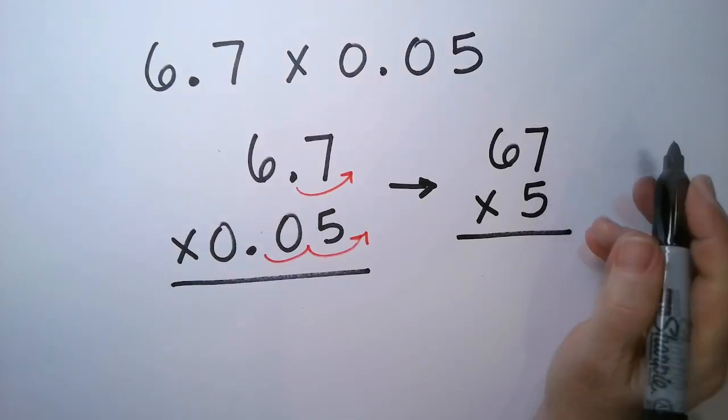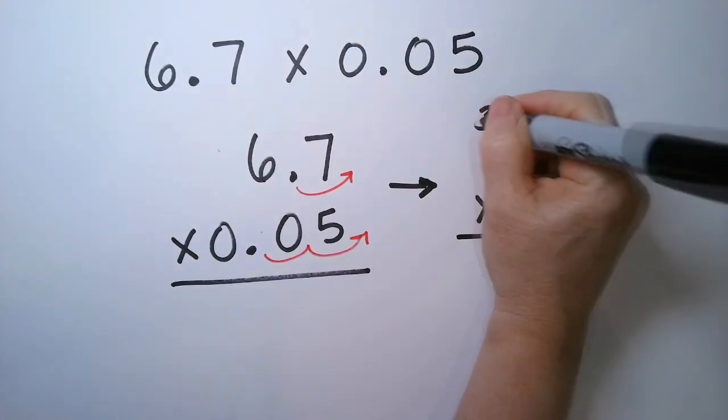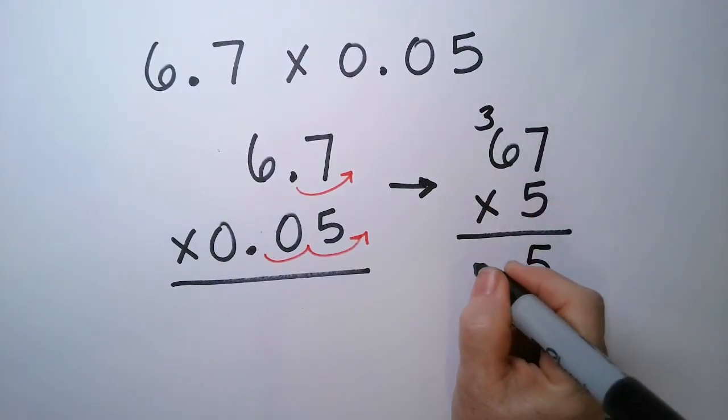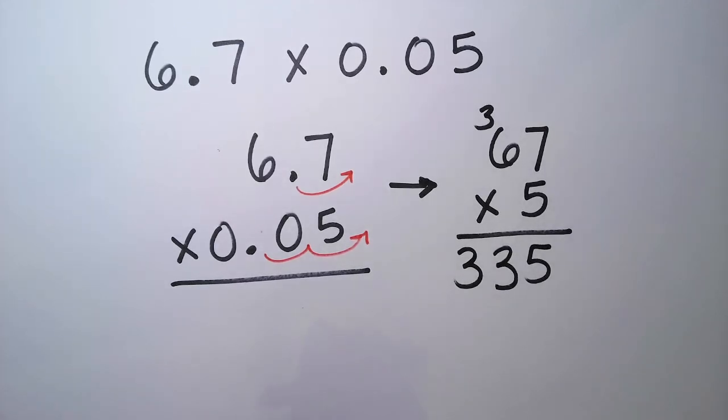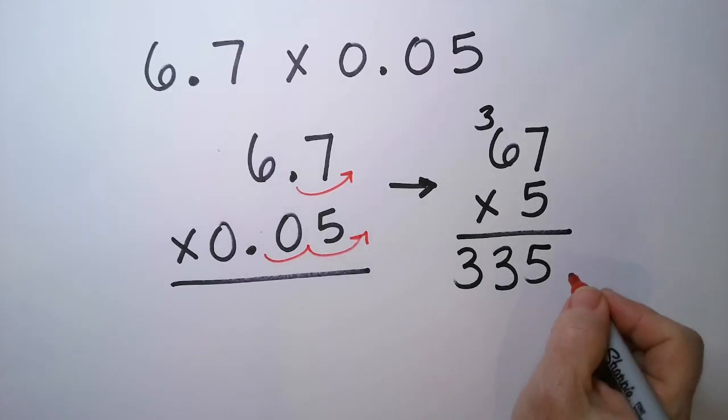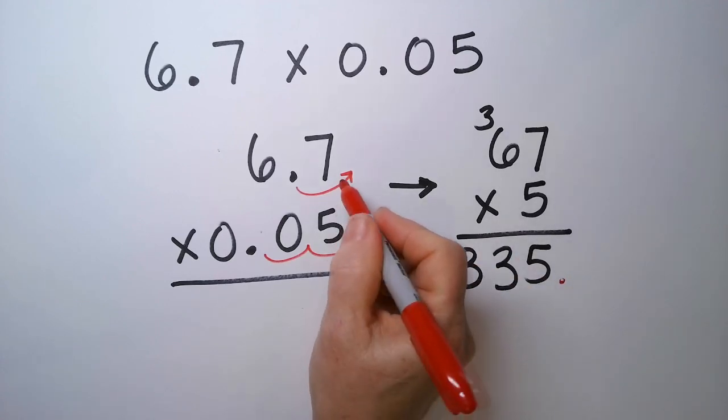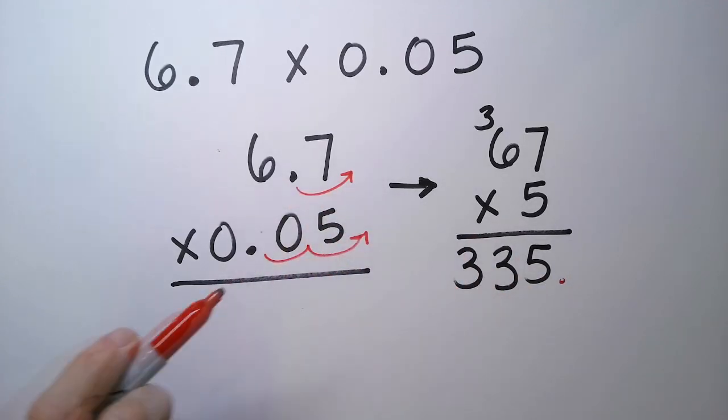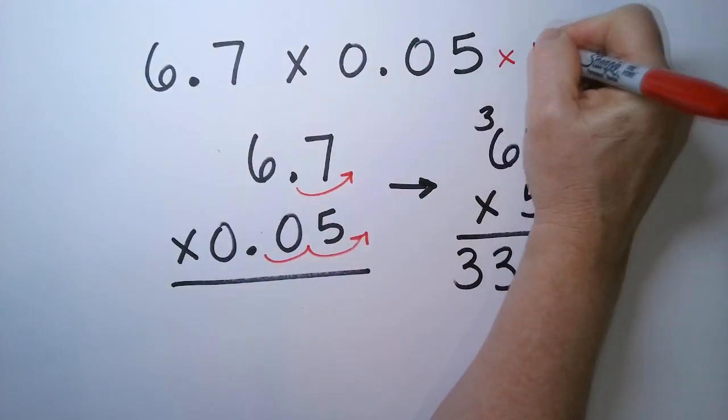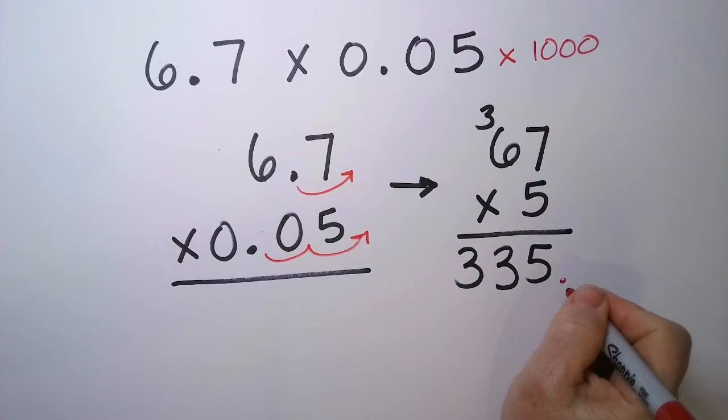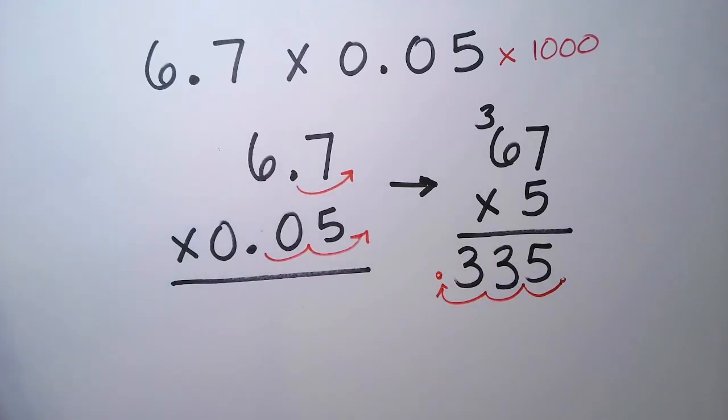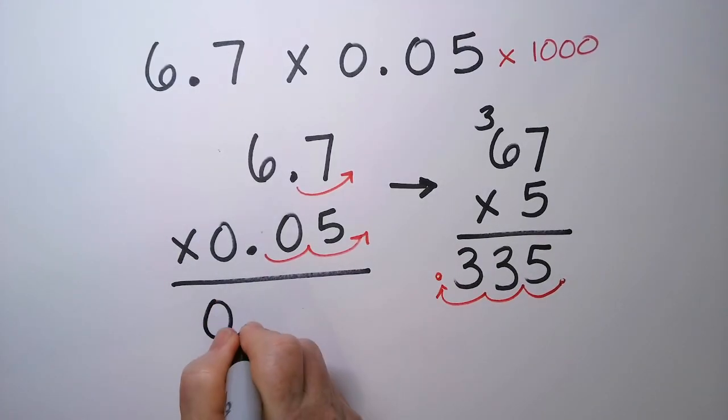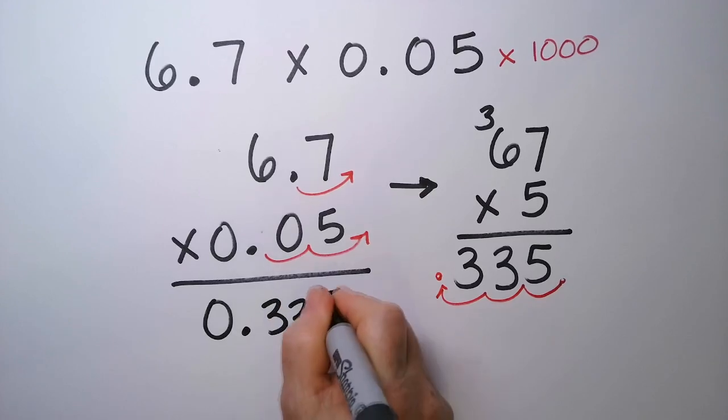So 7 times 5 is 35. There's the 3. 6 times 5 is 30, plus 3 is 33. So it's time for us to put the decimal number back in. So we start at the end, and we're going to go, we had 3 hops this way, which really means we multiplied by 1,000. So the decimal point starts here. We're going to go 1, 2, 3. Decimal point goes here. The answer to my problem is 0.335.